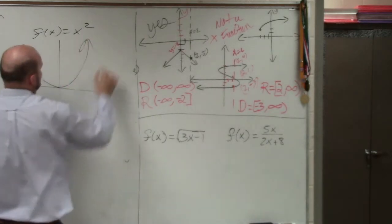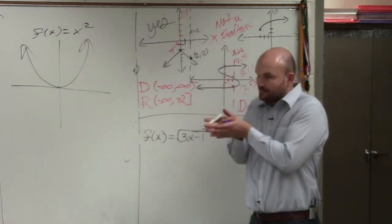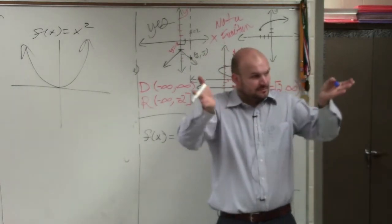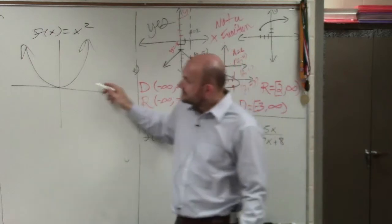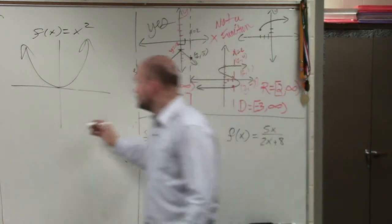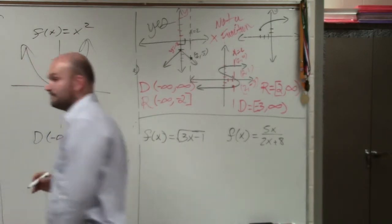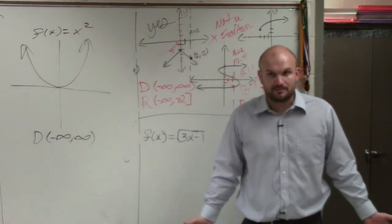Because in Algebra 2, you guys spent extensively on x squared, which produces a parabola. Now, here's that parabola. That graph is extending, right? It's going to keep on expanding. It's going to go infinitely to the left and infinite to the right. The domain of this one is negative infinity to infinity. Does everybody agree with me?